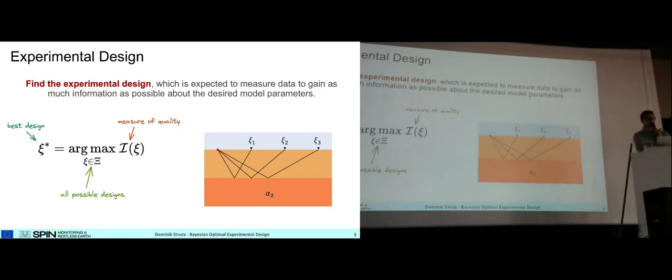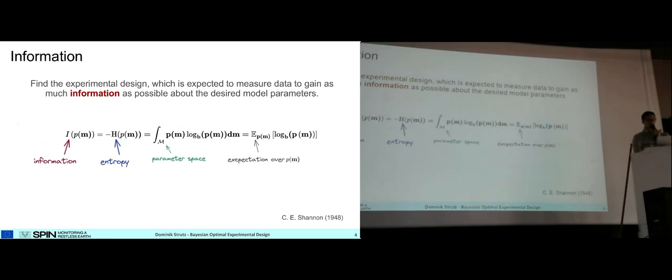What is this measure of quality now? It's only here that I start to make use of the Bayesian framework to make it possible to optimize for fully nonlinear problems. The basis of the quality measure we use is Shannon's information. Shannon's information criterion is just the information of a probability density function, usually expressed as the negative of the entropy. This is the expected value of the logarithm of this function.